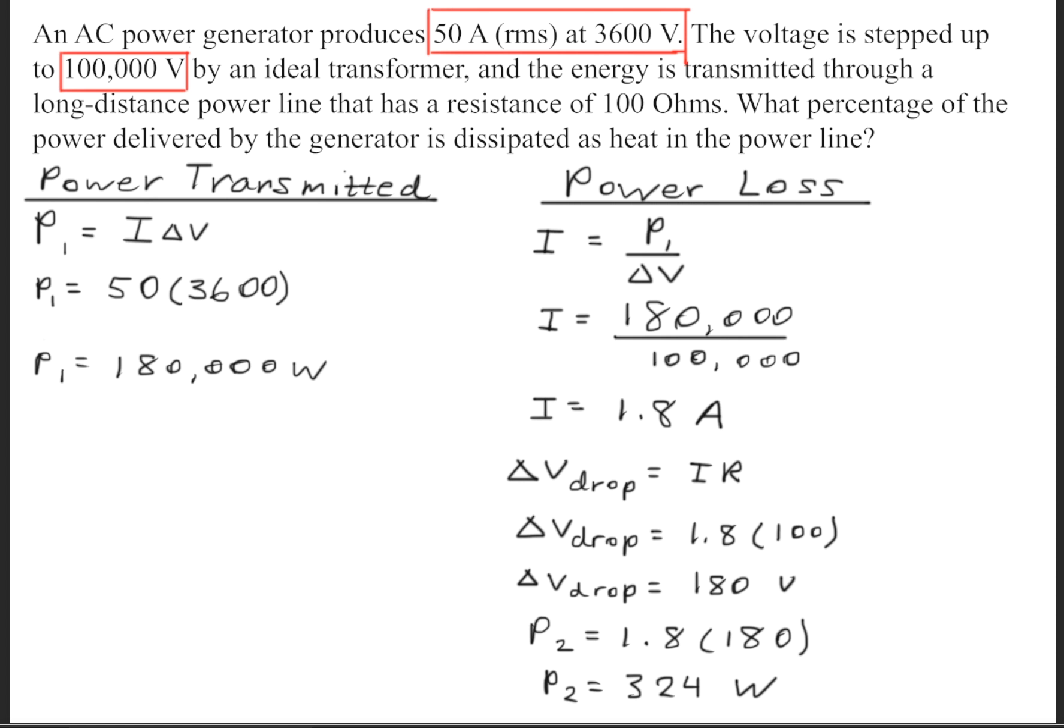Now to calculate the percentage that was dissipated as heat in the power line, we'll simply take the two powers that we calculated, find the ratio between them and multiply it by 100. So we'll get 324 watts divided by 180,000 watts times 100, which will give us 0.18% that was dissipated as heat.